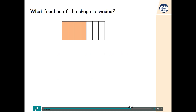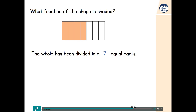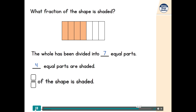Let's look at another fraction. In this fraction, the whole has been divided into seven equal parts again. How many equal parts are shaded this time? Yes, four of the equal parts are shaded, so four sevenths of the shape is shaded. Because four is greater than one, four sevenths is a non-unit fraction.